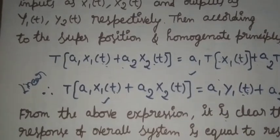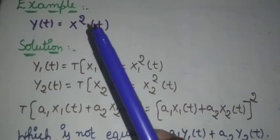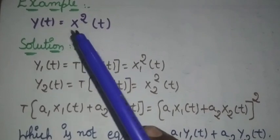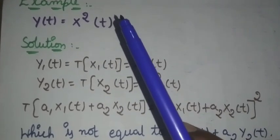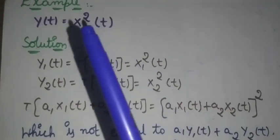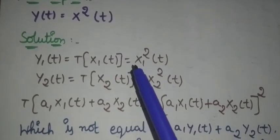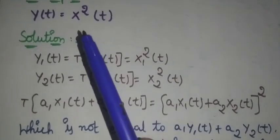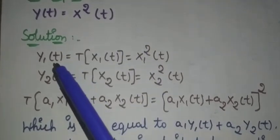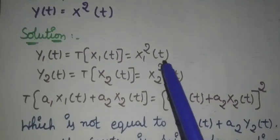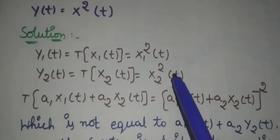Now we can see one example. This is an example of a non-linear system. For y(t) = x²(t), we determine whether it is a linear or non-linear system. First, we assume y1(t) = T(x1(t)) = x1²(t), because y(t) = x²(t). So y1(t) = x1²(t), and y2(t) = T(x2(t)) = x2²(t).